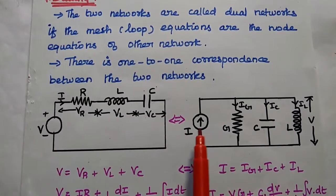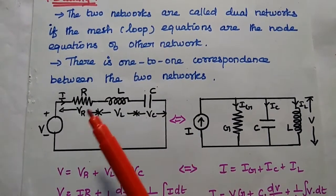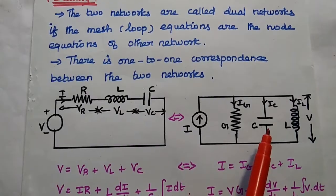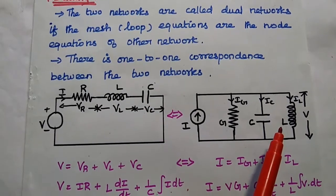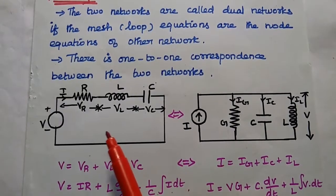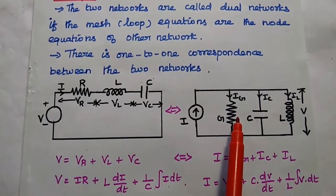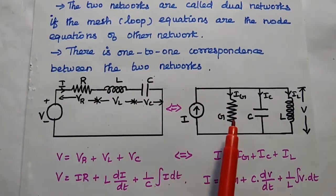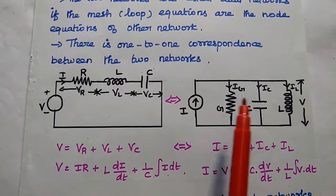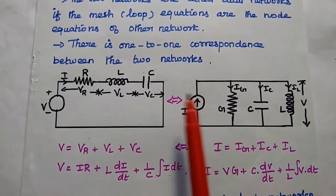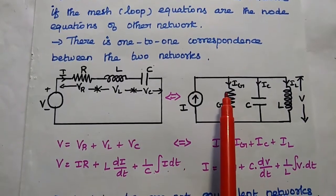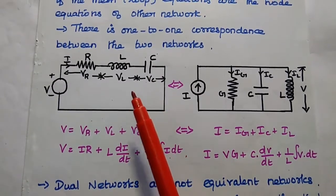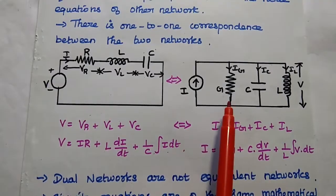Here we can have a voltage source; in its dual it is a current source. Here it is resistance; in the dual it is conductance. Inductance can be represented as capacitance, and capacitance can be represented as inductance. In one network we use Kirchhoff's voltage law; here we apply Kirchhoff's current law. Here all elements are connected in series; in the dual, all elements are connected in parallel. There is one-to-one correspondence — that is called a dual network. Here the voltage is divided; here the current is divided.